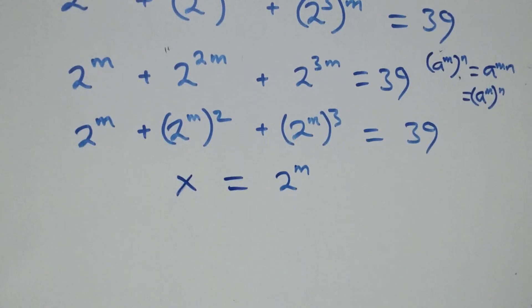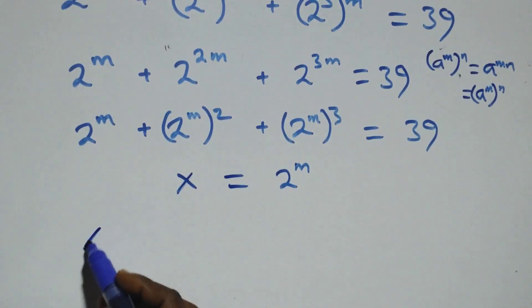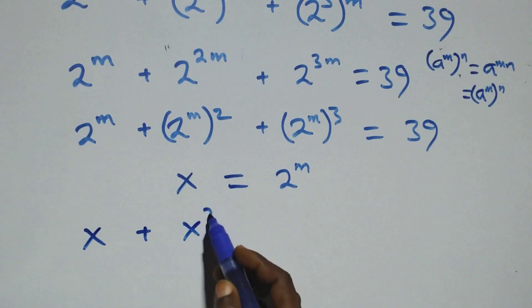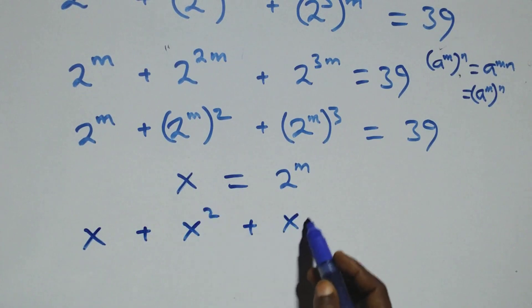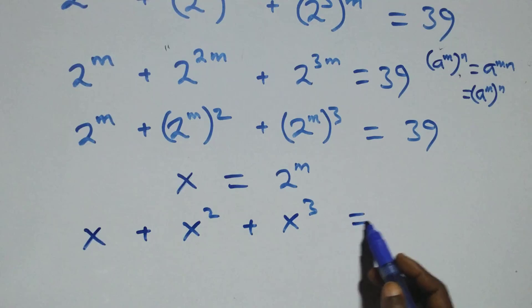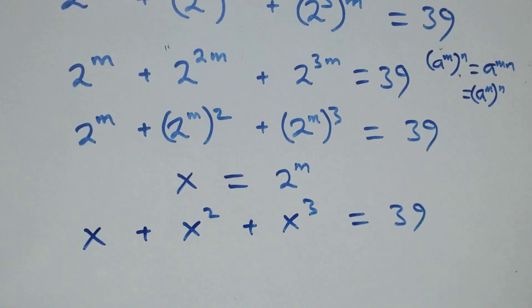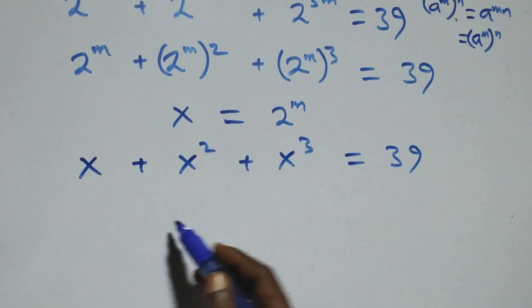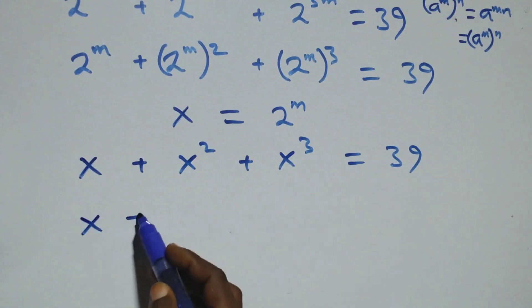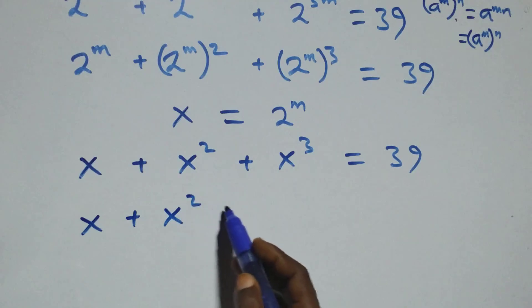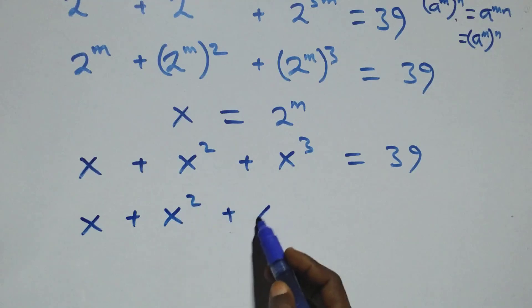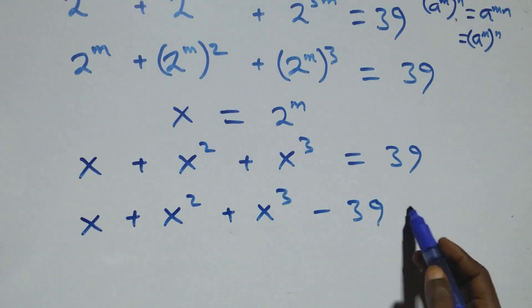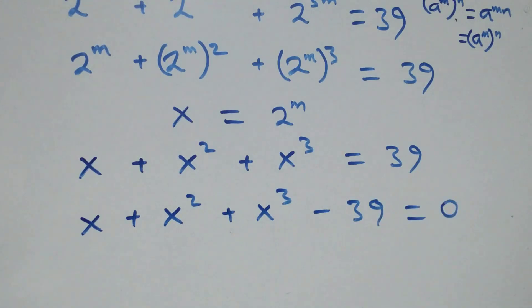Then this equation becomes x plus x squared plus x cubed equals to 39. The next step, we take 39 to the left hand side and we have x plus x squared plus x cubed minus 39 equals to 0 here.